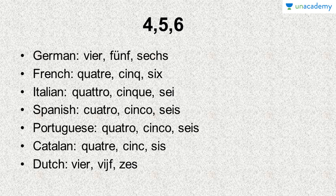Now for four, five, six. In German it's vier, fünf and sechs — vier, fünf and sechs. In French it's quatre, cinq — it sounds like S-A-N-K in English but it's written as C-I-N-Q — cinq, and six. Note that here the X is not pronounced and the I becomes a bit stressed: six. So quatre, cinq and six.